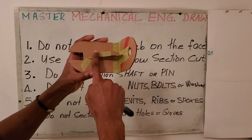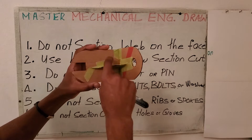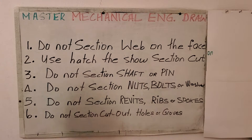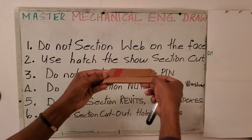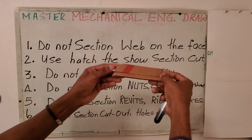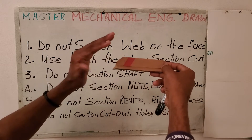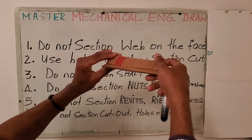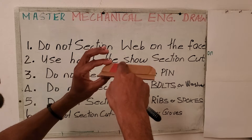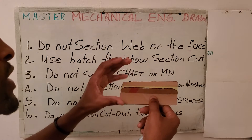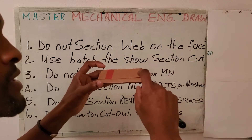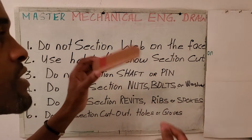However, if it is cut across on the narrow side, we do section it. Another example of a web — this web is used to reinforce this component, to prevent it from flexing. So this adds some rigidity. We do not section this. And typically, the web is thin when compared to the other parts of the component.